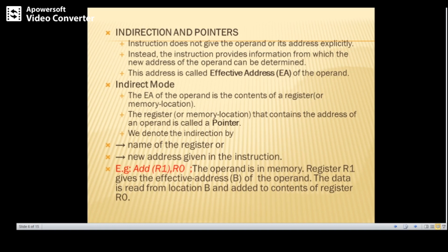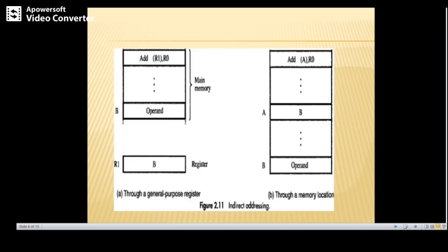In indirect mode, the effective address of the operand is the content of a register or memory location. The register or memory location that contains the address of the operand is called a pointer. For example: ADD (R1), R0 — the operand is in memory, register R1 gives the effective address B of the operand. The data is read from location B and added to the contents of register R0.